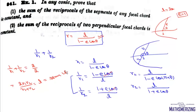Recall the condition in a parabola that the harmonic mean of the segments of a focal chord equals the semi-latus rectum. That result is not just true for a parabola — it is true for any conic section: parabola, ellipse, and hyperbola.